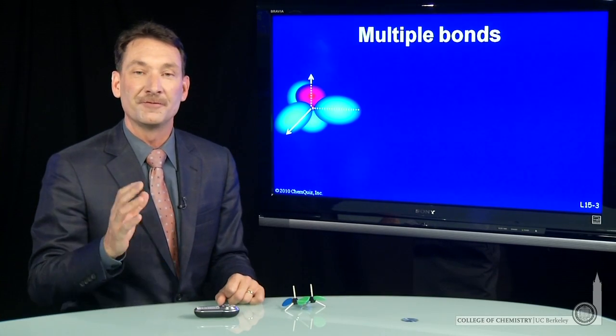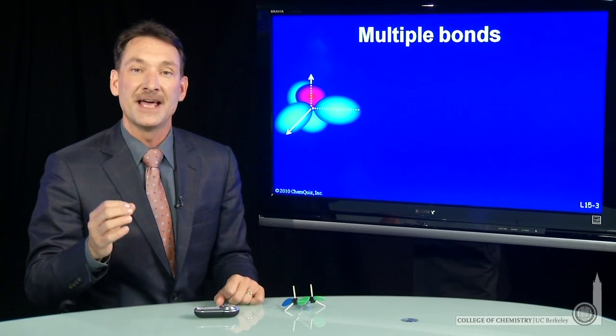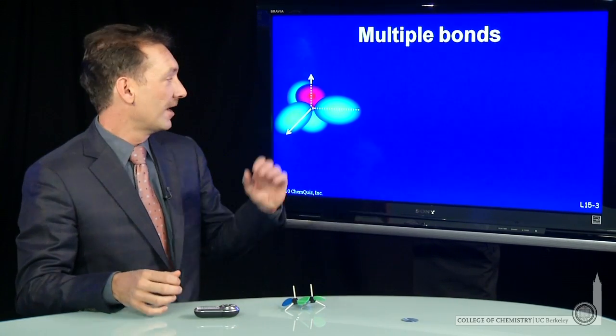Let's look at some of the molecular orbitals involved in forming multiple bonds. So when we have a carbon that's sp2 hybridized, and I've drawn one here...